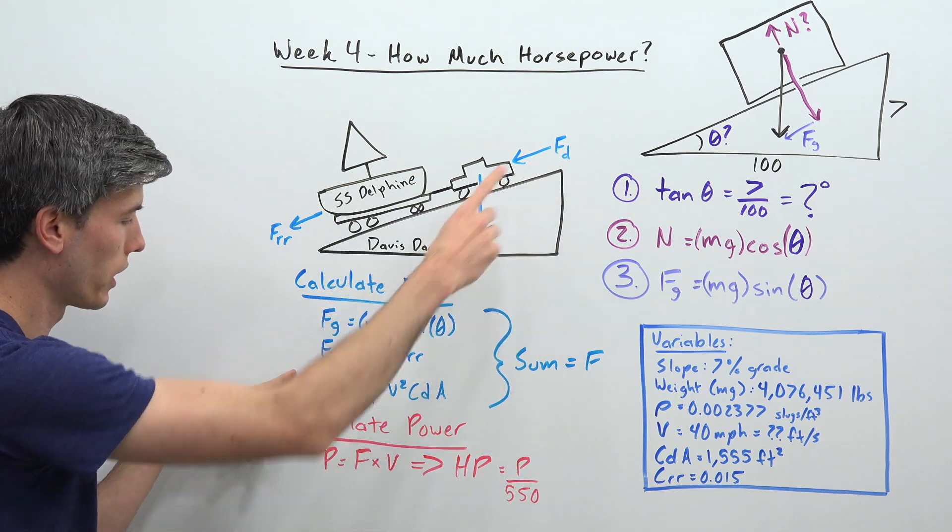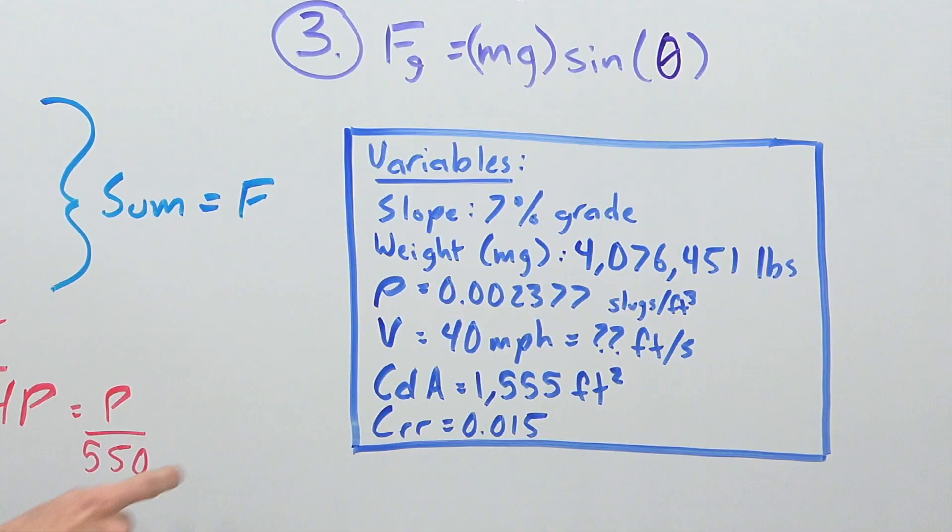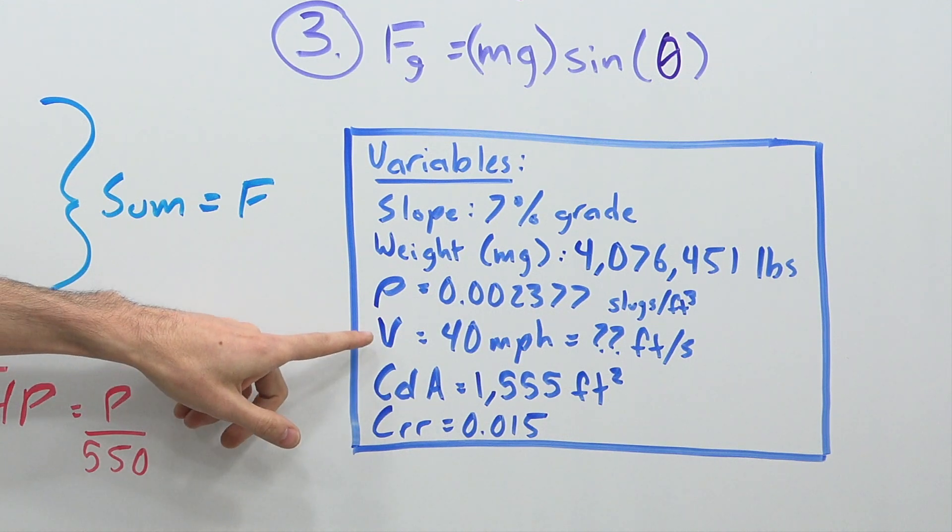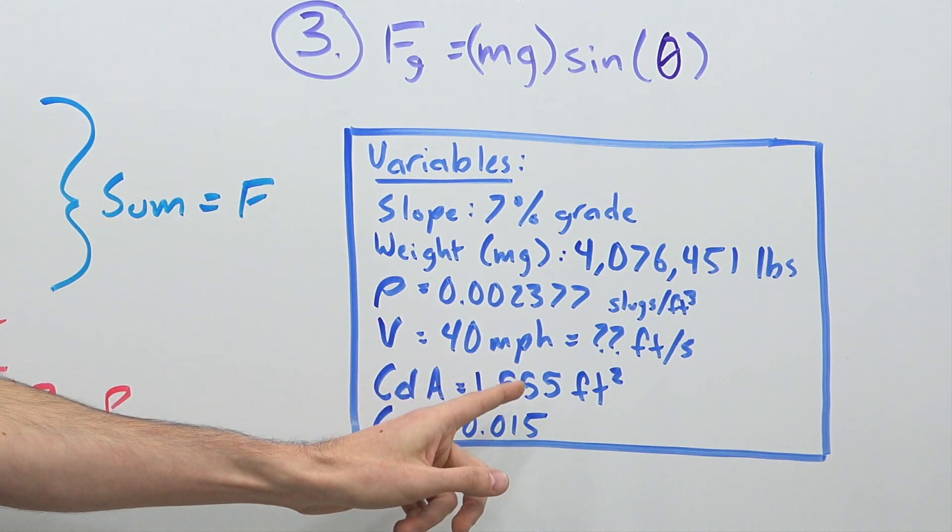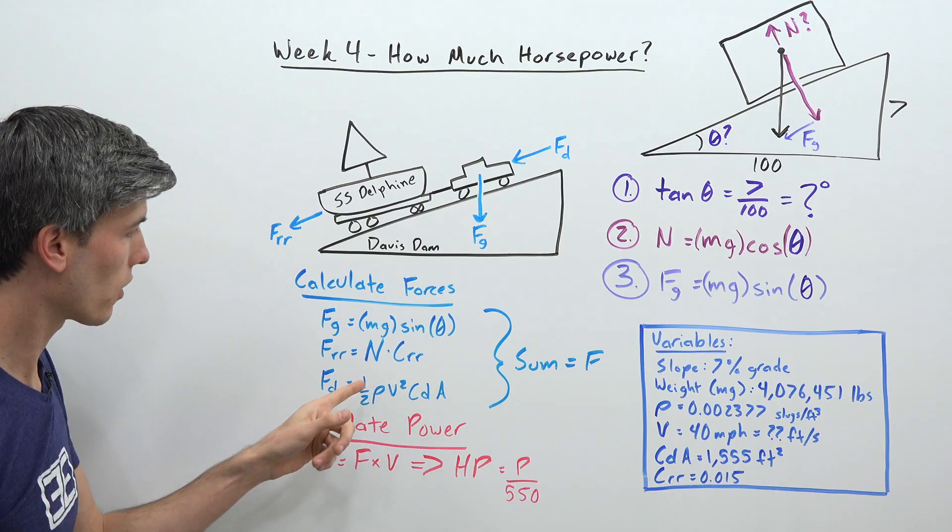And then finally we're calculating the force of drag, which is 1 half rho v squared CdA. And we have all of these variables here. So there's rho, our velocity, which again you have to convert to feet per second, and the combined CdA, which is 1,555 feet squared. And so plug all that in...